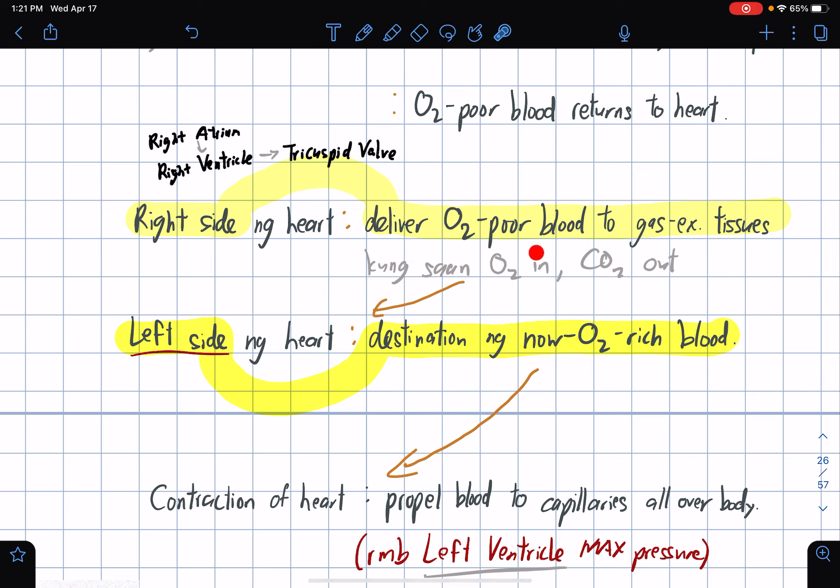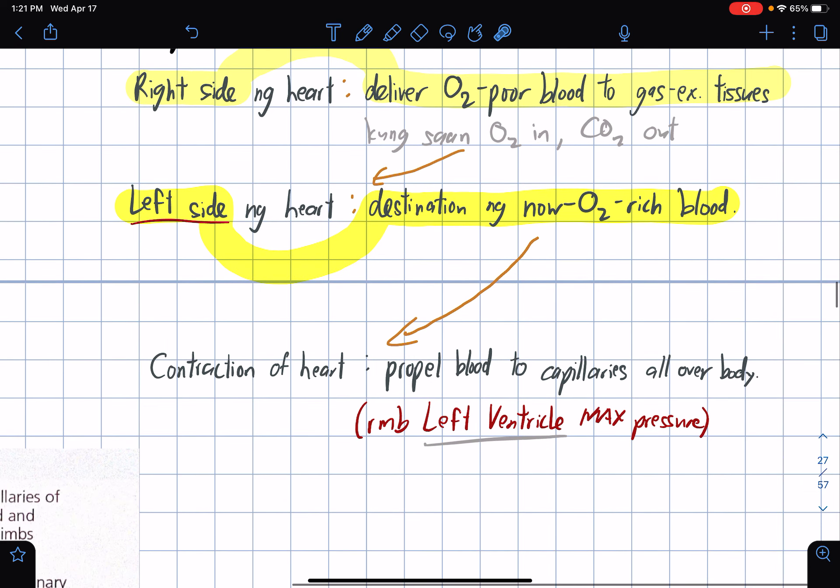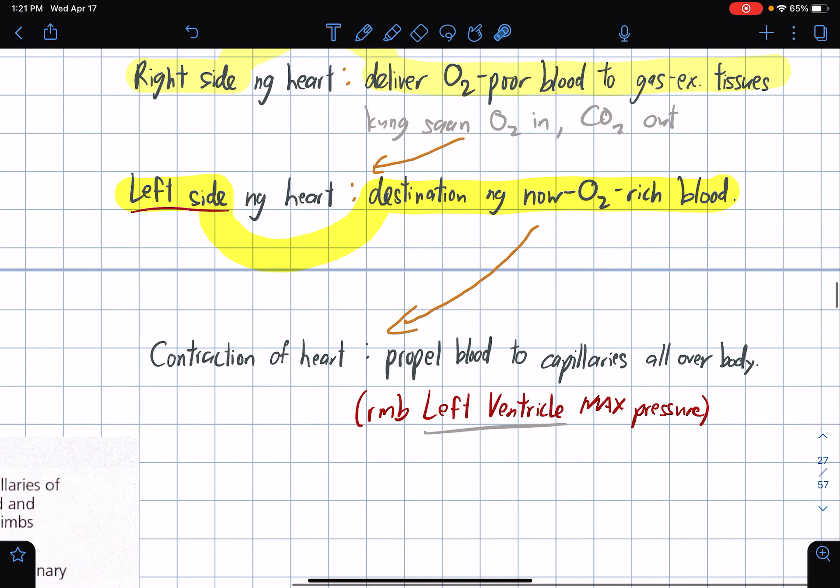The right side is basically the right atrium, the right ventricle, and the tricuspid valve. This is where O2 goes in and CO2 goes out. At the left side of the heart, this is the destination of the now O2-rich blood that eventually goes to the parts of the body through organs and tissues.